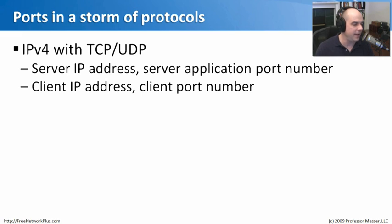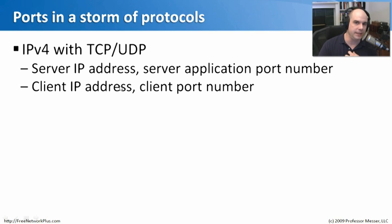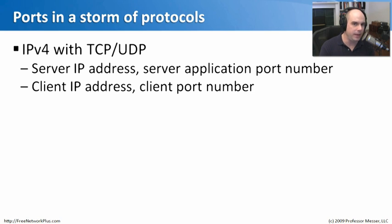The packet has to have a server IP address, and it has to have an application port number for the server. Our client machine also needs an IP address, and it needs to send information out via a port number. So those are the four pieces we need to have a successful communication via IPv4 and via TCP or UDP.